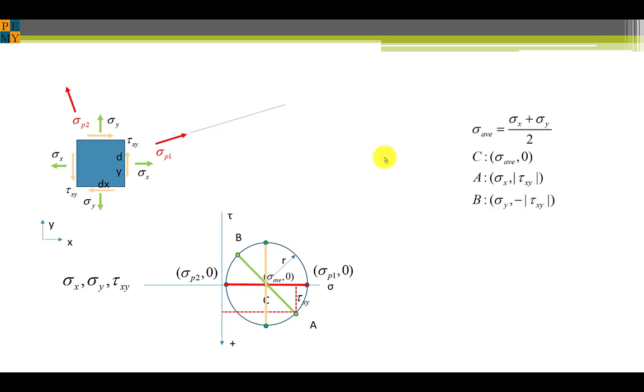The next thing we can do is to start plotting the points. The middle point or midpoint of Mohr's Circle is sigma average. That's simply the average of the two normal stresses that we're given, sigma x plus sigma y over 2. So the center can be plotted at sigma average comma 0 on the sigma axis.